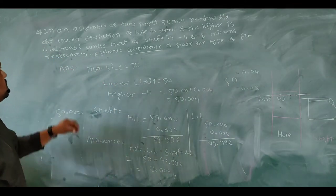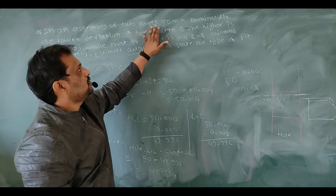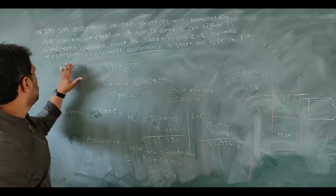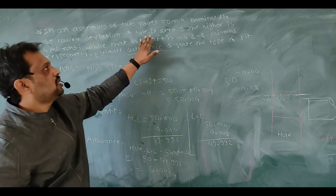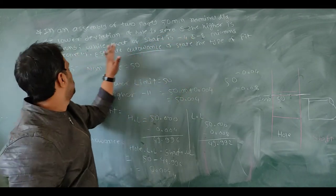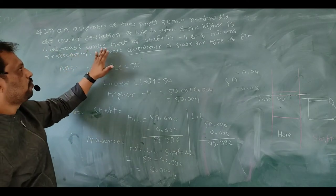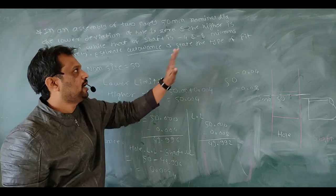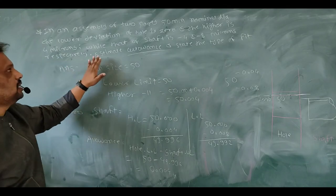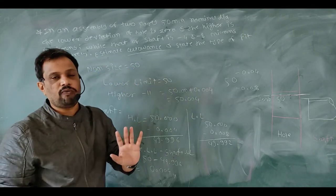The statement of the problem is: in an assembly of two parts with 50mm nominal diameter, the lower deviation of hole is zero and the higher is 4 microns, while that of shaft is -4 and -8 microns respectively. Estimate allowance and state the type of fit.